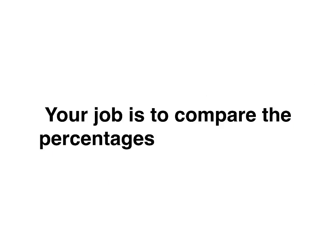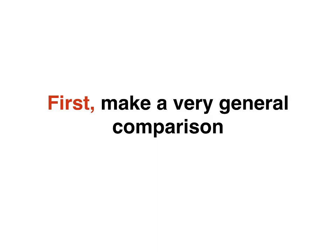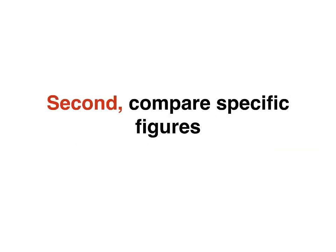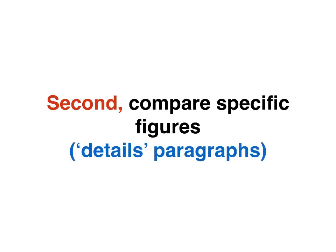So your job is to compare the percentages — that's the main thing — but you can also compare numbers if numbers are shown. Once you've written your introduction, you're going to do two types of comparison. First, make a very general comparison in your summary or overview paragraph — that's paragraph two. And second, compare specific figures: specific percentages or numbers or both. That's for your details paragraphs, paragraphs three and four.